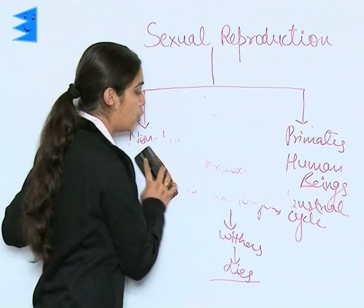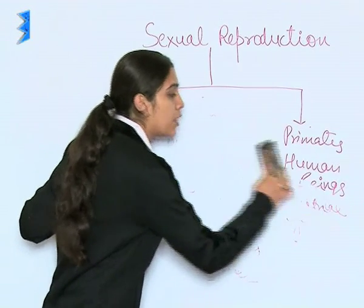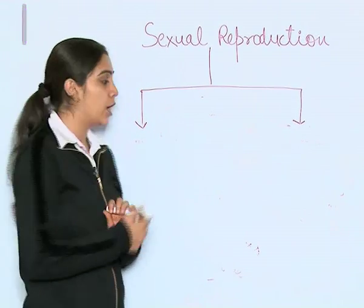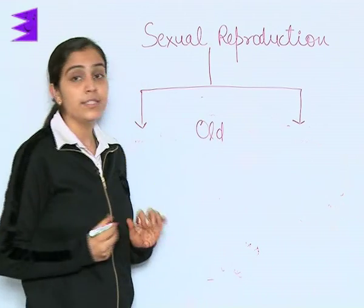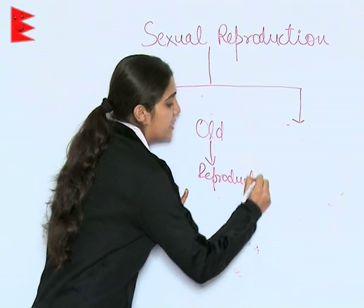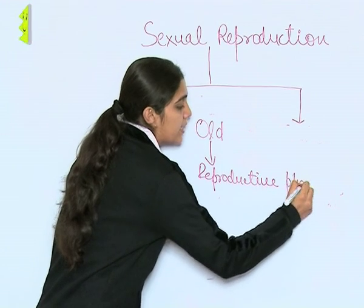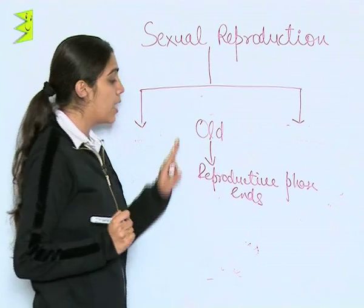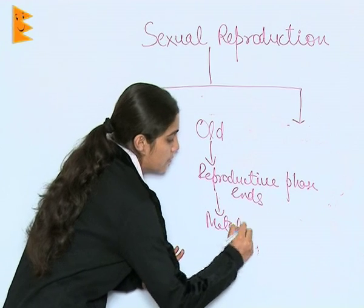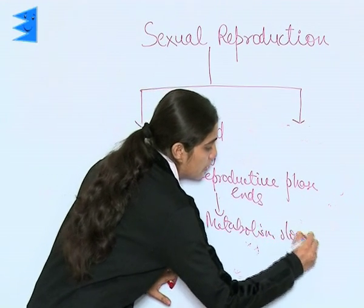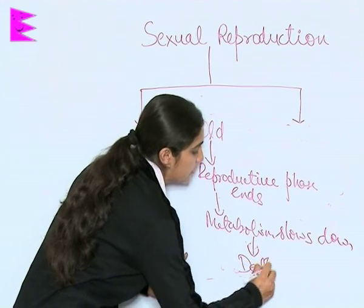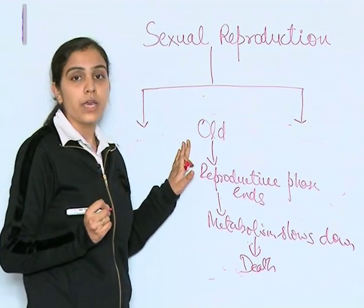What do we observe in human beings? What do we observe amongst ourselves? We observe that as gradually we live, we grow old. And what happens when we grow old? The reproductive phase ends. As the reproductive phase ends, metabolism also slows down, and further it leads to death. This is what we observe in human beings.